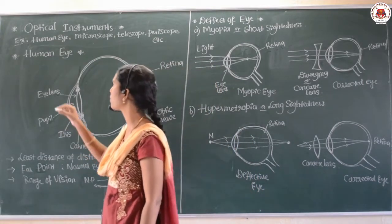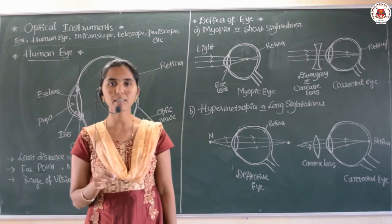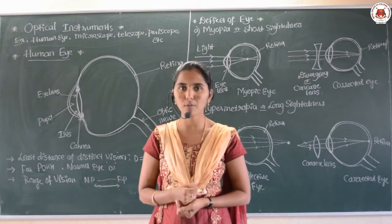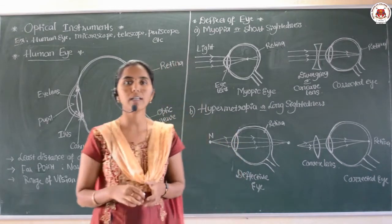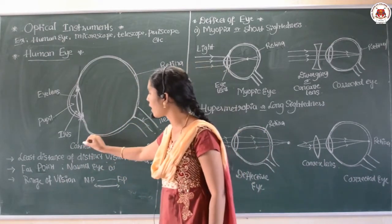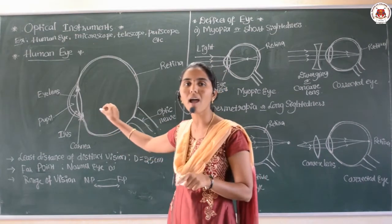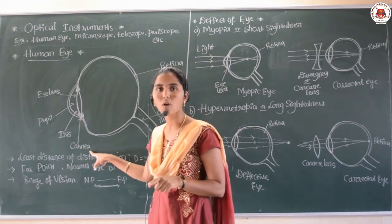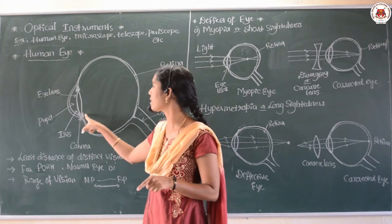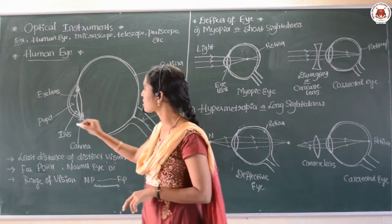Let us talk first about the human eye. The human eye is the most sensitive part of the human body, and it can capture all images of an object. The eye contains different parts. The first part is the cornea - the spherical part of the eye through which light enters into the eye. Then the next one is the pupil.